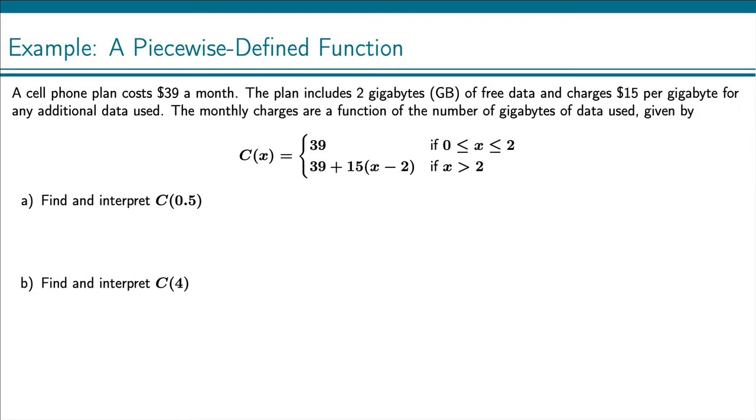So this is an example. A cell phone plan costs $39 a month. The plan includes 2 gigabytes of free data and charges $15 per gigabyte for any additional data used. The monthly charges are a function of the number of gigabytes of data used, given by C(x).